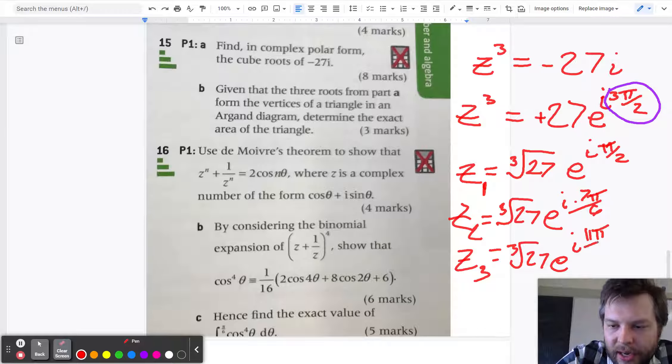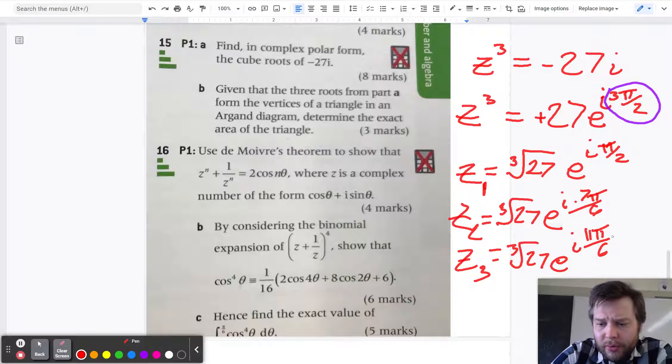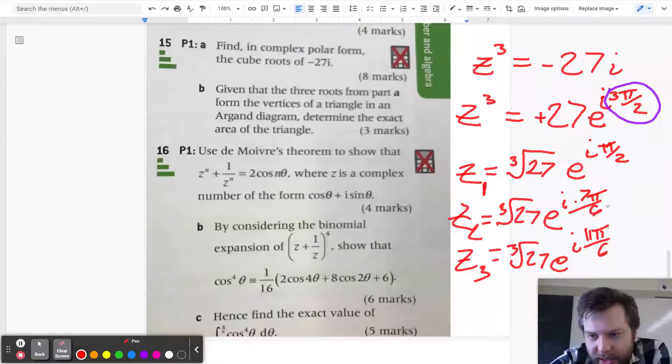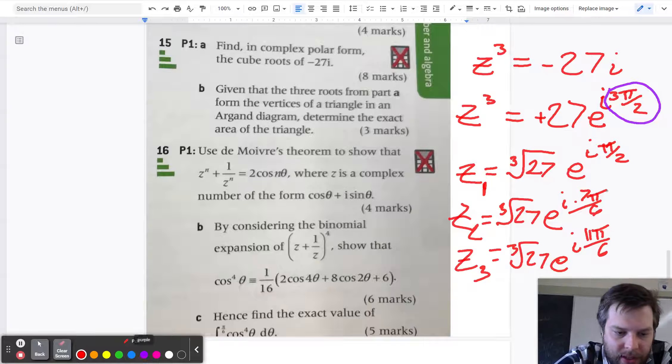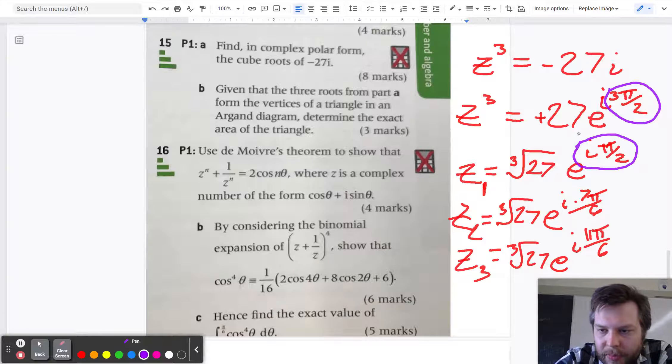And you should just double check that if you do cube those values, you get back to z cubed. So if I cube the cube root of 27, that makes 27. That's good. And if I multiply each of these angles here by 3, let's just double check. If I multiply this angle by 3, I hope it's pretty obvious that that becomes 3 pi over 2.